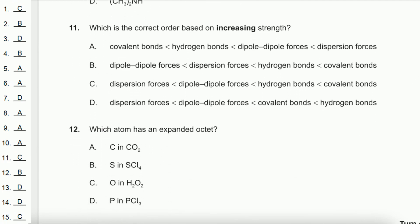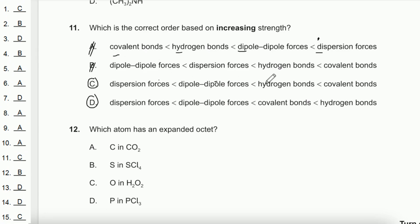Question 11: Which is the correct order of increasing bond/intermolecular strength? Dispersion force is the weakest, so options without dispersion force first are eliminated — A and B are not the answer. The correct order is: dispersion force < dipole-dipole < hydrogen bond < covalent bond, since covalent bonds are intramolecular and the strongest. The answer is C.